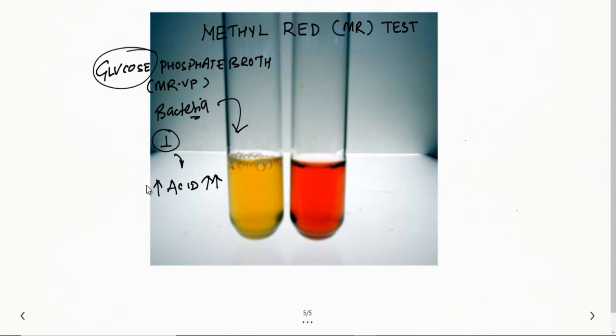Due to these acids, the pH will go down. If pH goes down below 4, then after incubation of 48 hours when you add methyl red reagent, it gives you a red color. If red color is seen, that means it is MR positive. If red color is not seen on adding MR reagent, that means it is methyl red negative test.